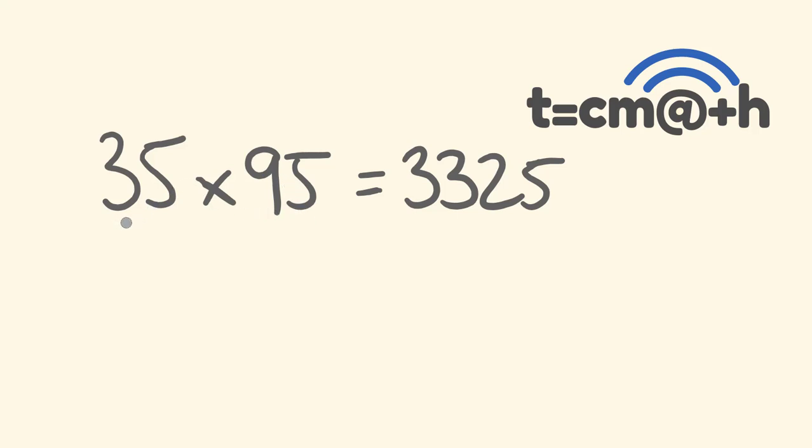What we're going to be having a look at is the numbers before the fives to work out our answer here. We're going to be using the 3 and the 9. And we're going to do a couple of things. The first thing we're going to do is multiply these two numbers. So 3 times 9 is equal to 27.